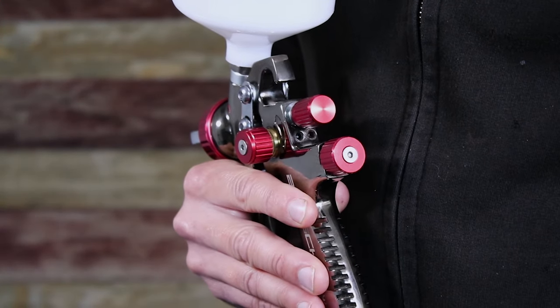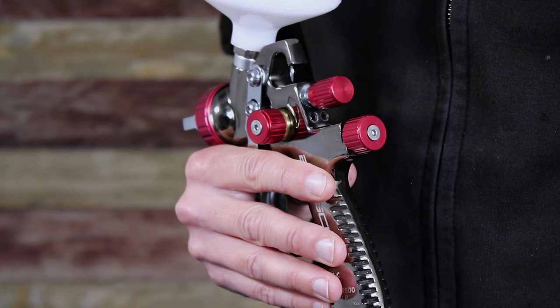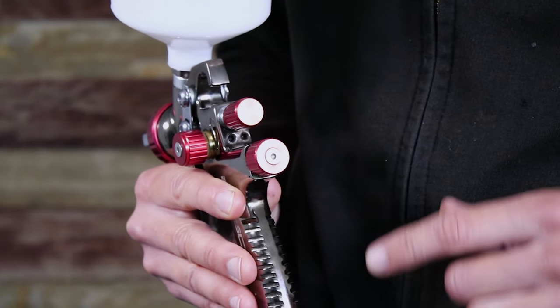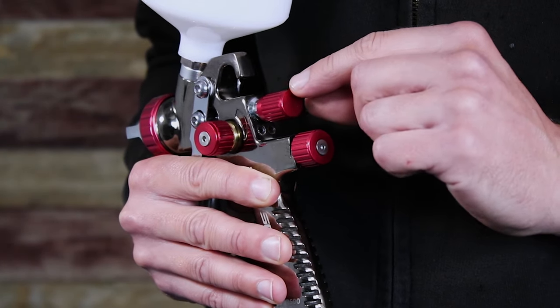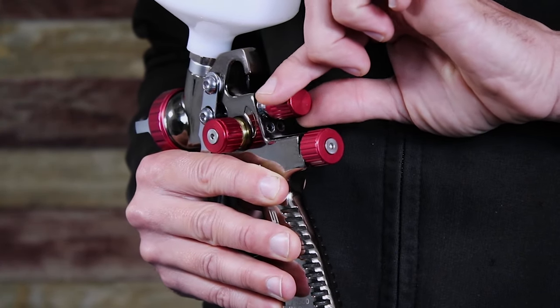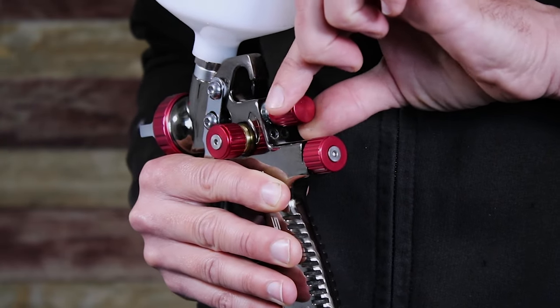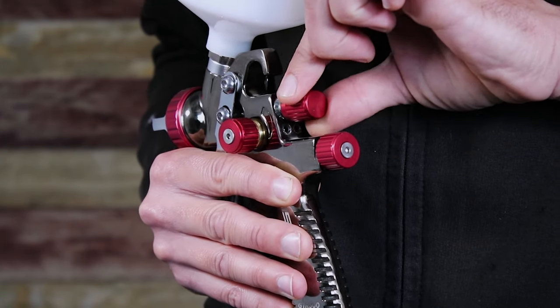In this instance we have the fluid adjustment which will adjust the amount of paint that the spray gun will allow through the fluid tip. We normally recommend closing this completely by turning the adjuster clockwise all the way until it stops, then turning it back out three full turns.